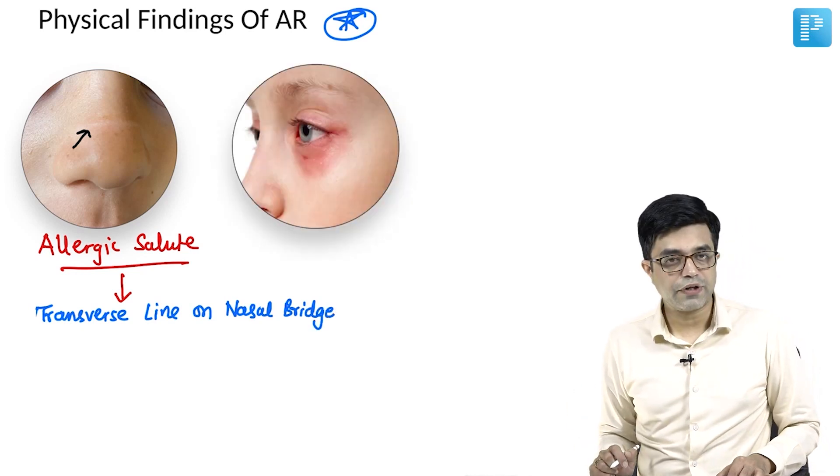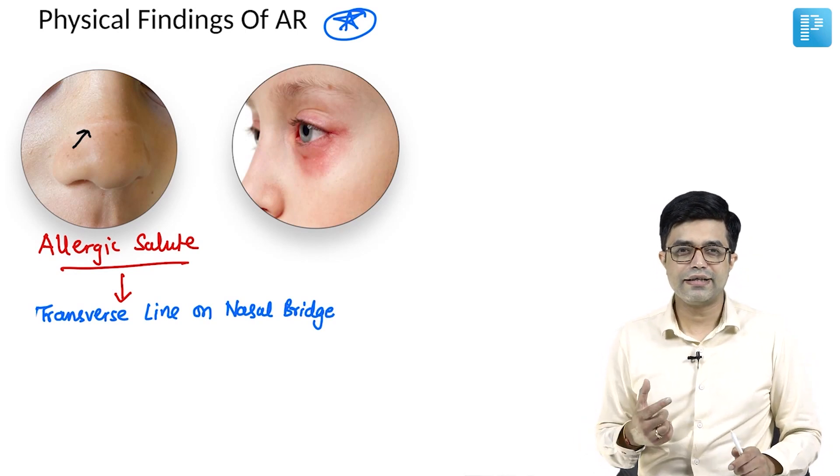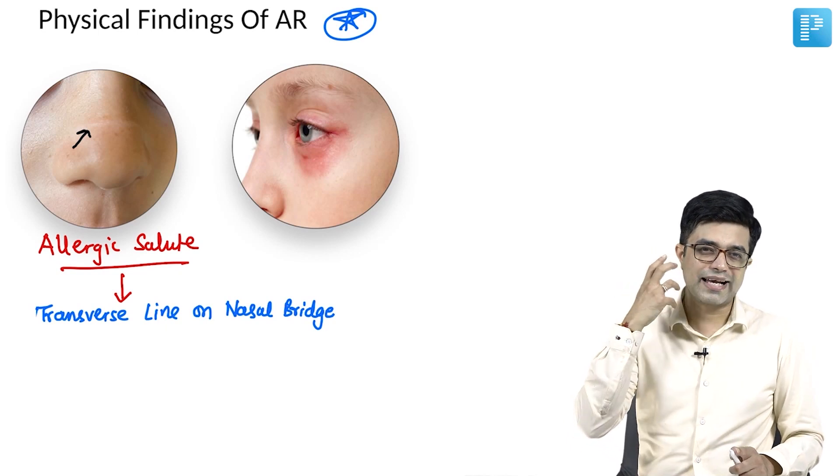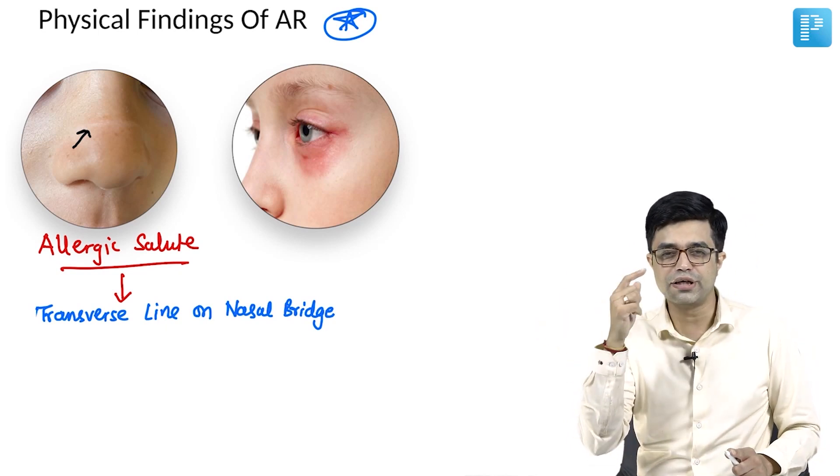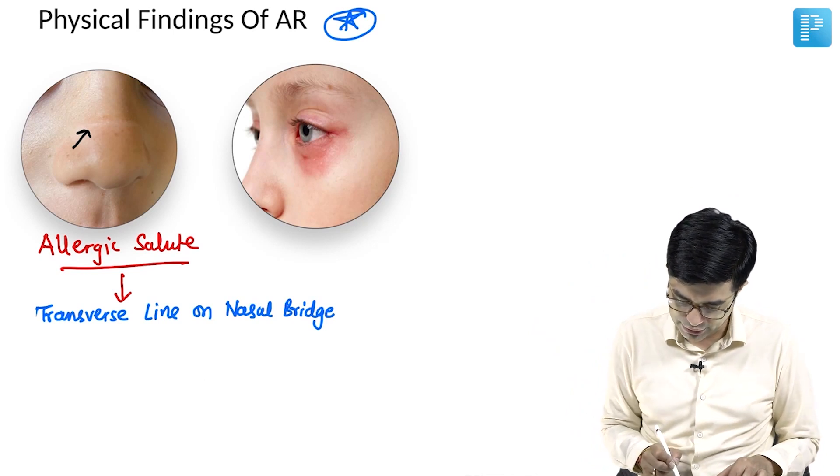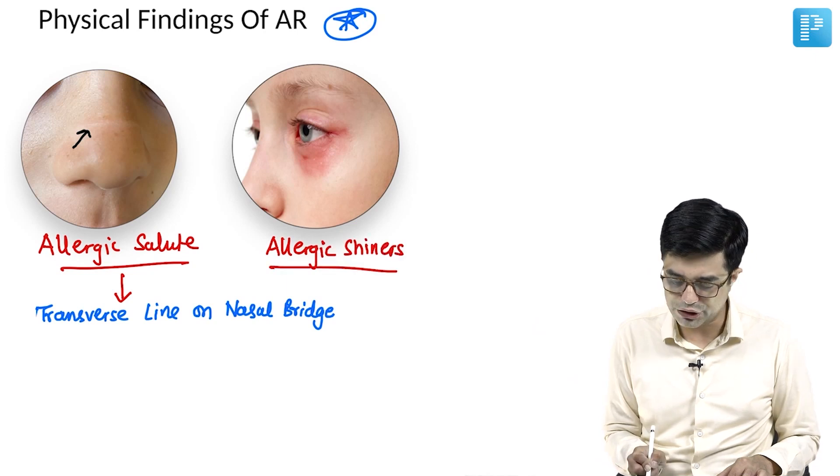Second is this. You will find that children, mothers will complain that the child is having some blackish discoloration or erythematous to blackish discoloration around both eyes. This is called as allergic shiners. So around both the eyes, there will be some degree of hyperpigmentation happening.